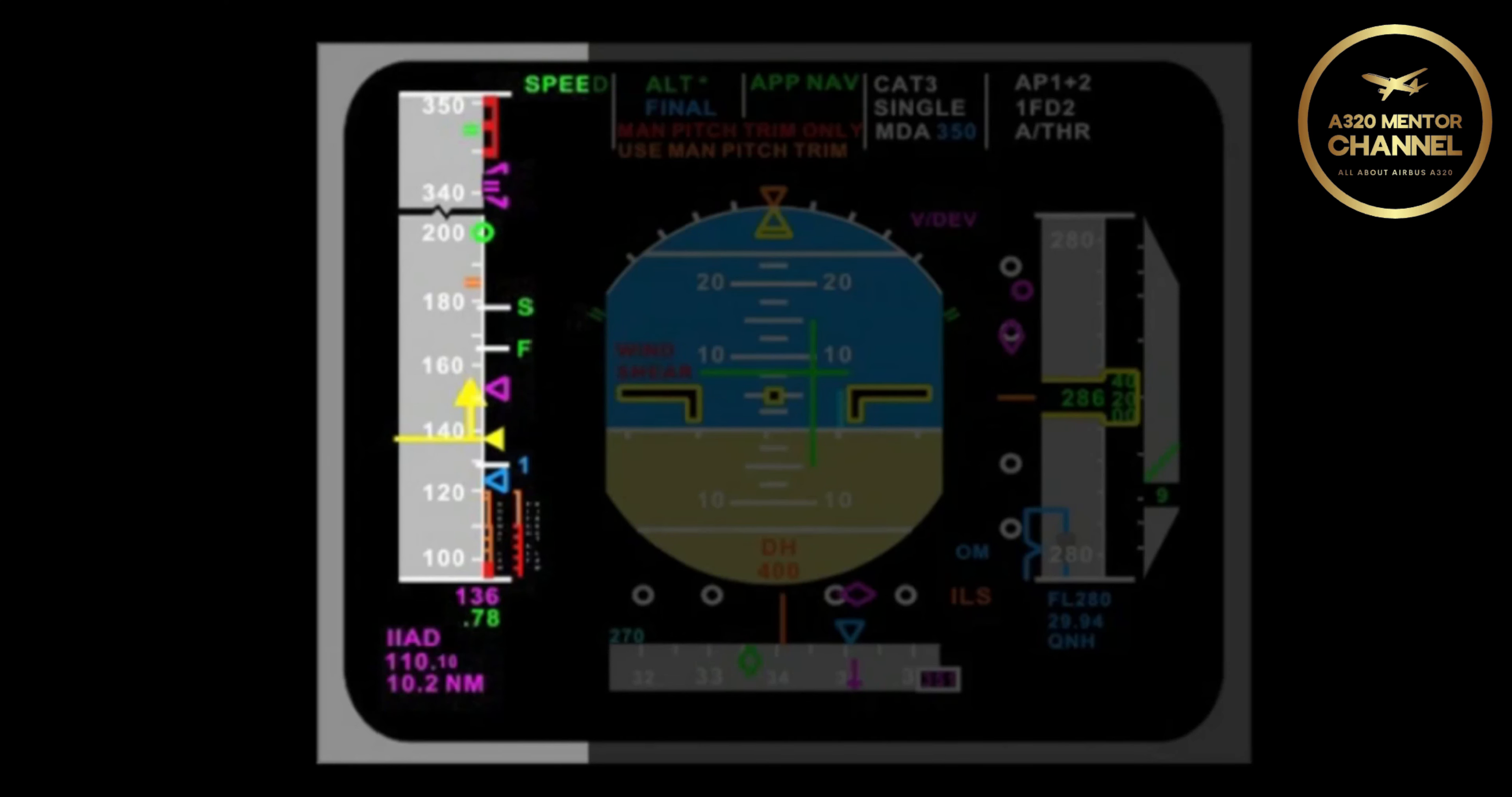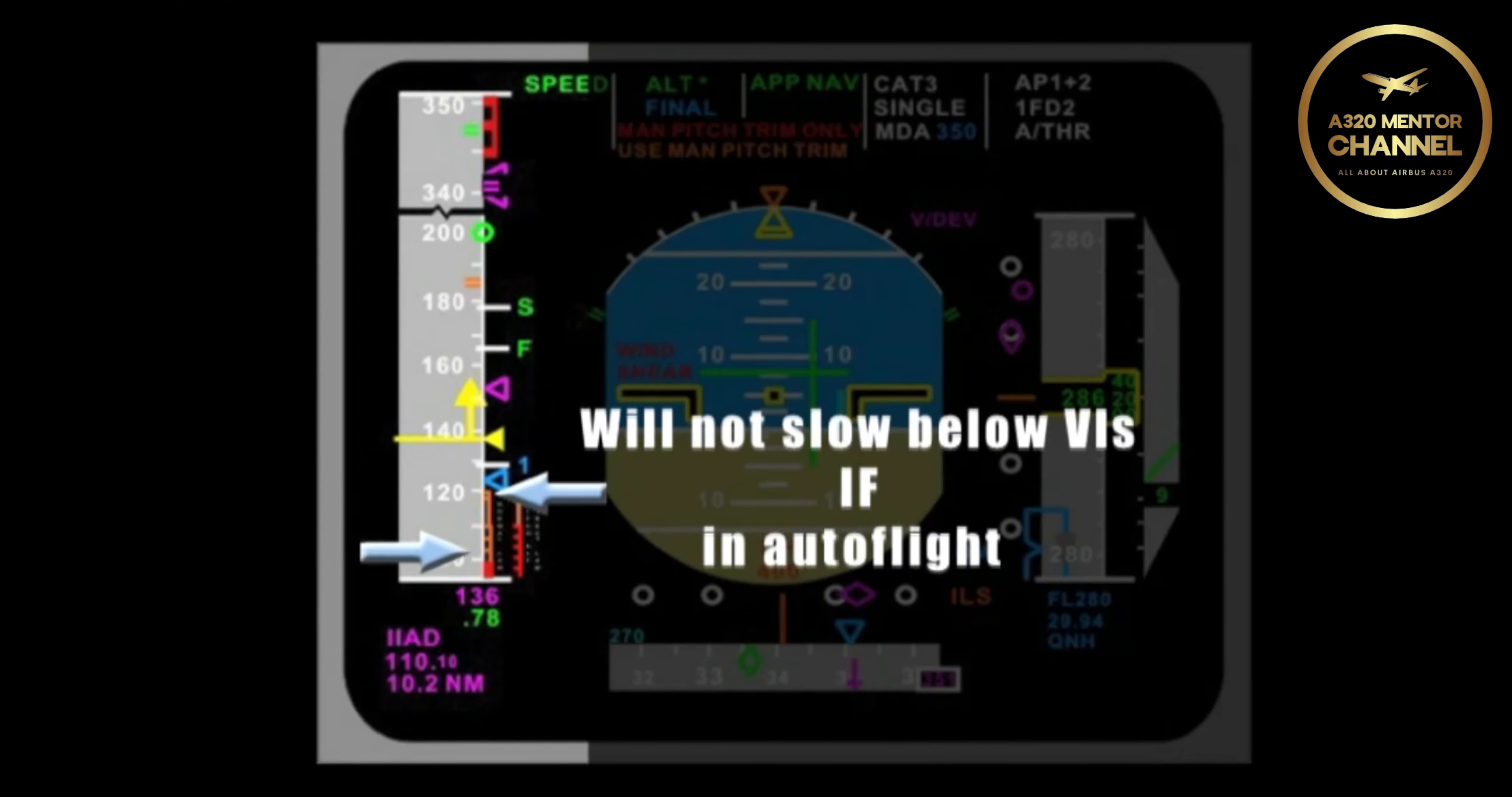At the bottom right of the speed tape are a couple of symbols. The one nearest the speed tape is sometimes called the tiger's tail or the bumblebee. What does the top amber portion represent? That represents VLS, the lowest selectable speed. What if the pilot selects a speed on the FCU that is below VLS? Will the aircraft slow to that speed? No, assuming we are in autoflight. The aircraft will only slow to VLS, not below.